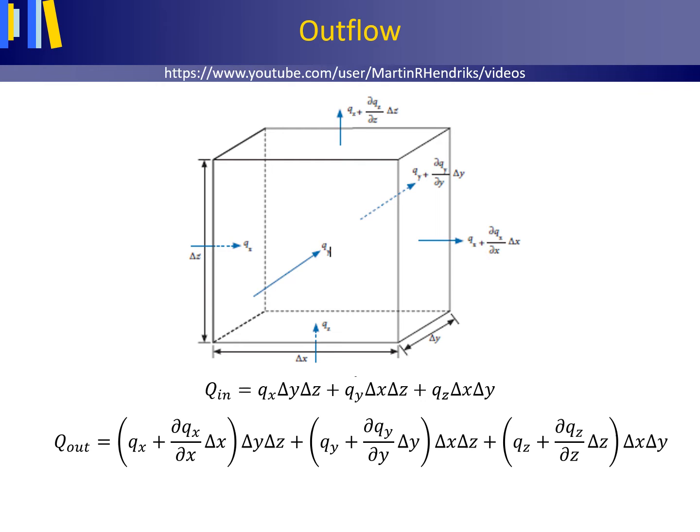The outflow from the elemental control volume Q out equals Qx plus the total change dQx/dx times delta x in the x direction and this times the area delta y delta z perpendicular to the groundwater flow in the x direction, etc. for the y and z direction.